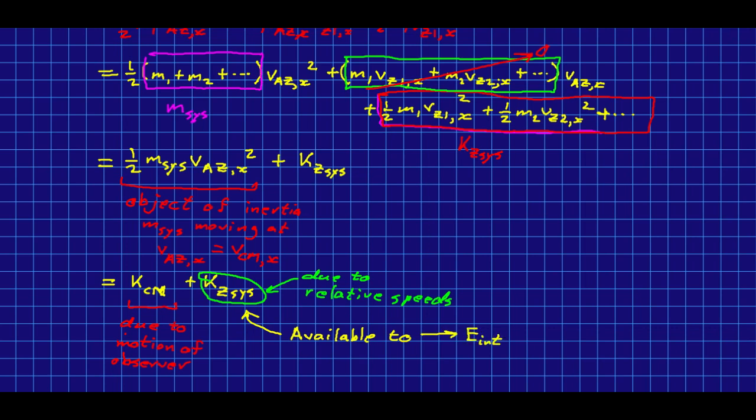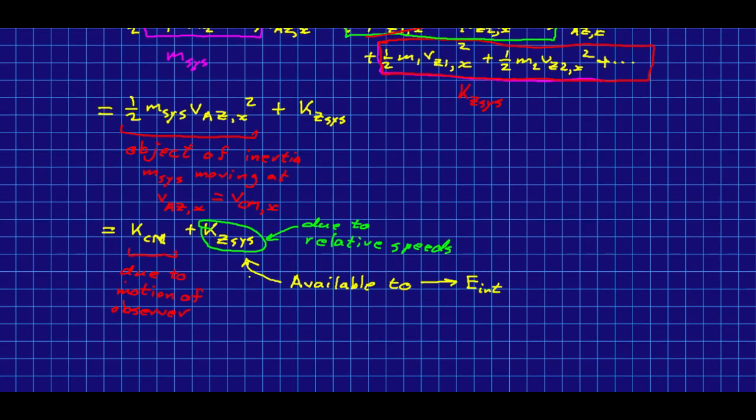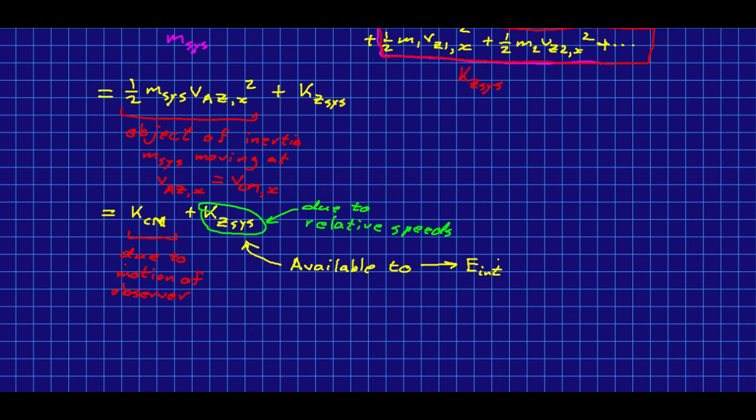And so, from the point of view of what the system is able to do within itself, this is the important part. And so, we will call it also, we can call it the z frame kinetic energy of the system. But, it is also the convertible kinetic energy.